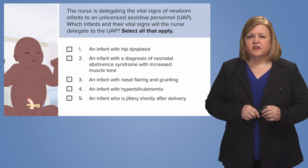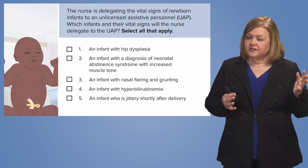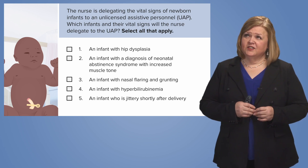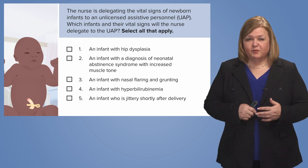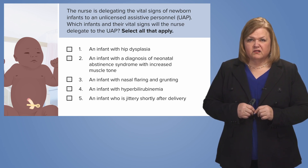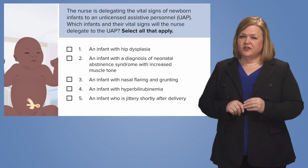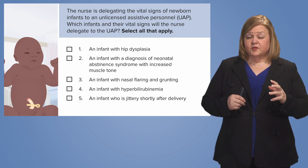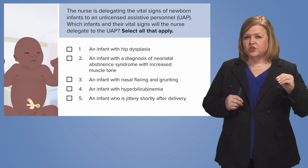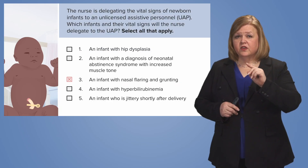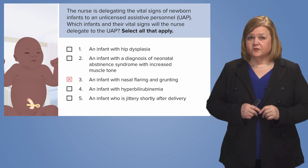Look at answer choice number three: an infant with nasal flaring and grunting. That is not a good sign. Is that a stable patient? No. The baby is working really hard to breathe — they're in imminent respiratory distress. Would I send a UAP in? Absolutely not. That has to be an RN. Since the question asks which infant's vital signs I would delegate to the UAP, the answer is no — number three is out. They are showing serious signs of respiratory problems.